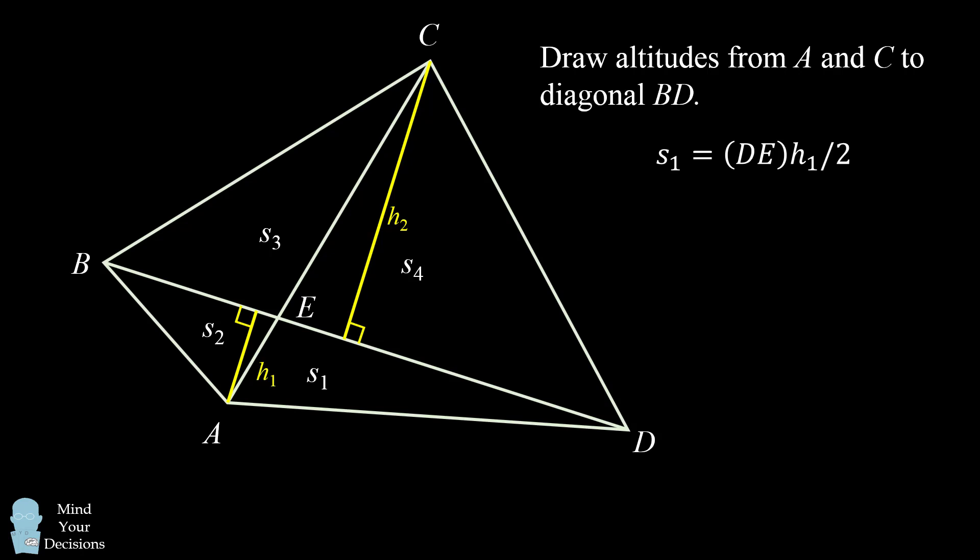Similarly, s2 is the area of a triangle which has a base of BE and a height of h1. So s2 equals BE times h1 divided by 2. We can continue writing the formulas for the areas of these regions using the same principle.